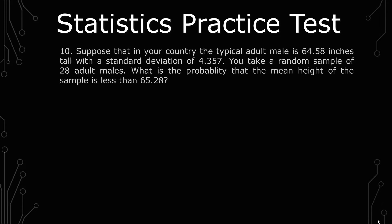The question we're going over today is: suppose that in your country, the typical adult male is 64.58 inches tall with a standard deviation of 4.357. You take a random sample of 28 adult males. What is the probability that the mean height of the sample is less than 65.28?